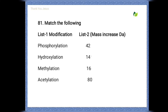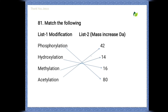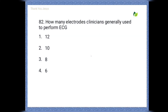Here we have to match list one with list two. List one contains modifications and list two contains mass increases in Daltons. The matching is: phosphorylation +80, hydroxylation +16, methylation +14, acetylation +42.